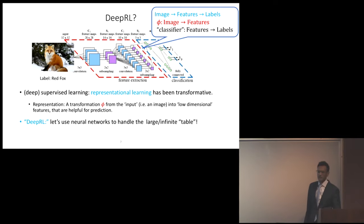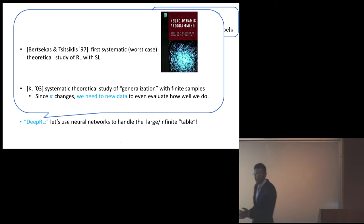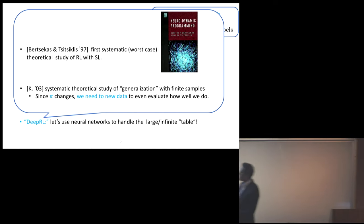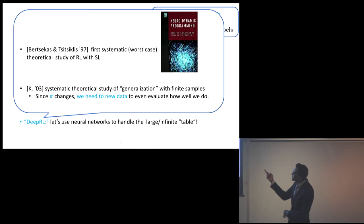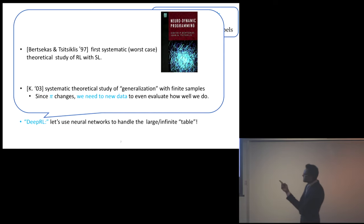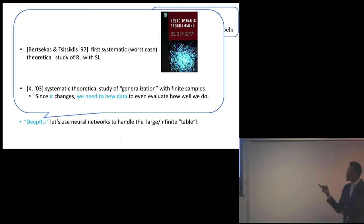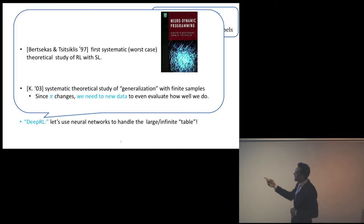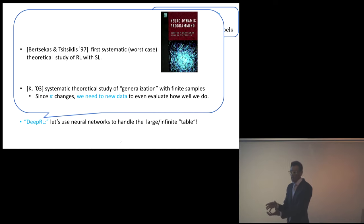The approach is to use our ability to generalize in supervised learning to deal with this infinite table. We might think about learning some type of representation of the world to help us deal with this large, infinite table. This is the spirit of deep RL — using the success of neural networks in dynamic programming. This idea isn't entirely new; the first worst-case analysis of deep learning was in the book Neurodynamic Programming by Bertsekas and Tsitsiklis, which really was an error analysis motivating the use of neural networks instead of dynamic programming.